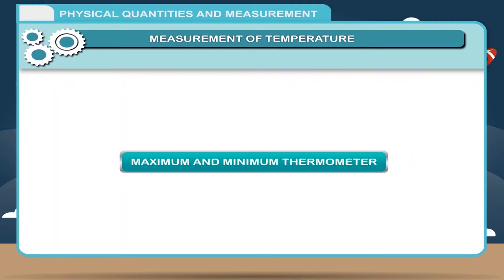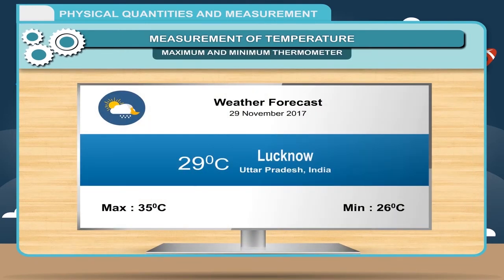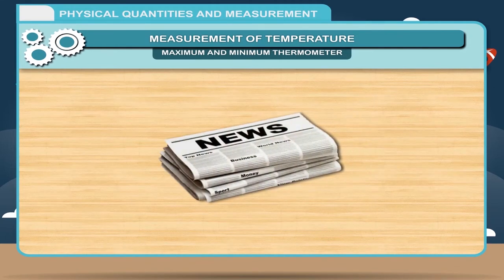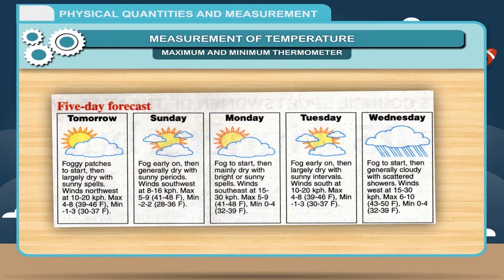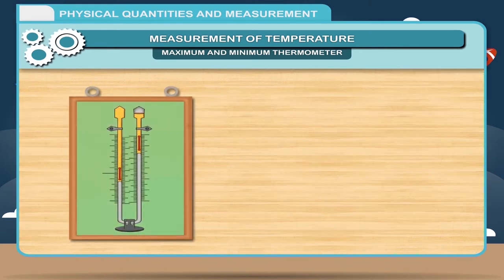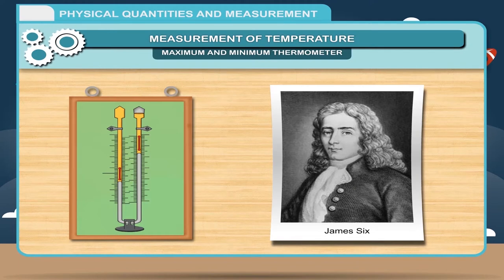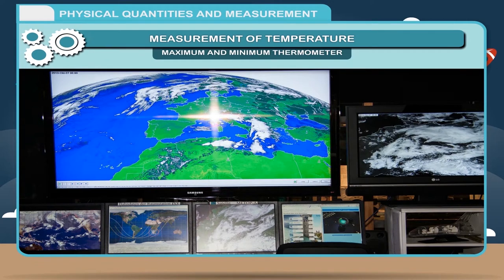Maximum and Minimum Thermometer: You must have seen the maximum and minimum temperatures of various metropolitan cities displayed on television. Most newspapers also give the maximum and minimum temperatures under the weather report. This thermometer was invented by James Six in the 18th century and is therefore named Six's thermometer. It measures the minimum and maximum temperatures attained during the day and is used by meteorologists to record the highest and lowest temperature of a place on a given day.